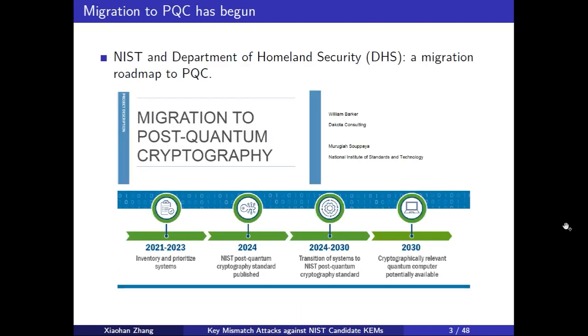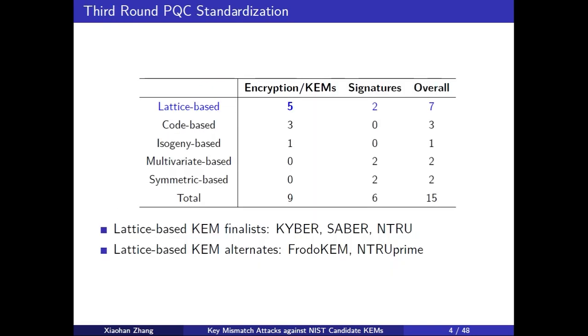As we know, the migration to PQC has begun. Just on October 2021, NIST and Department of Homeland Security created a migration roadmap, preparing for a transition to PQC. The process is expected to be completed in 2030. The current PQC standardization conference reached the third round. On the final list, the lattice-based schemes has drawn significant attention. On the third round list, there are still five out of nine candidates in lattice-based schemes.